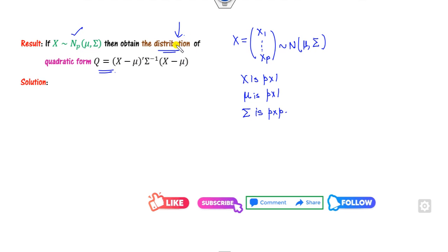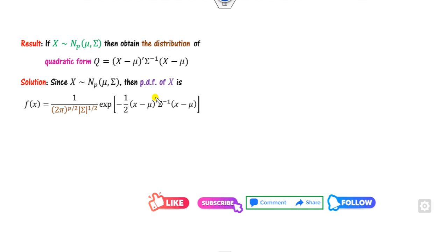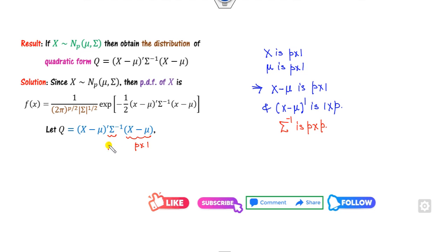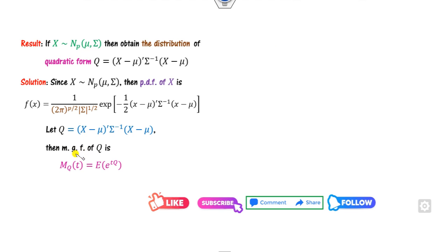Since we are talking about the distribution, x follows the multivariate normal distribution, so what is the probability density function of x? Now, if I consider this value Q: x is my p×1 matrix, mu is my p×1 matrix, so (x − mu) is also p×1, and (x − mu)ᵀ is 1×p. Also, sigma is p×p, so sigma inverse is p×p. Multiplying them — (1×p)(p×p)(p×1) — Q is a 1×1 matrix, meaning Q is a scalar. Since Q is a scalar, we can define its moment generating function, denoted mQ(t).